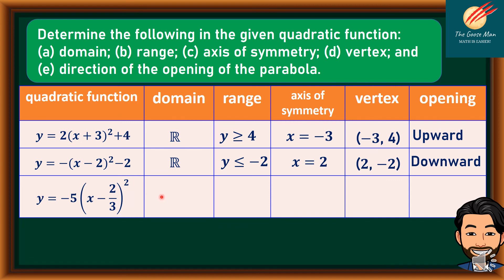Finally, we have y = −5(x − 2/3)². The domain is the set of real numbers, from negative infinity to positive infinity. The range is y ≤ 0, since the value of k is equal to 0.